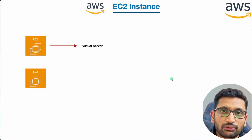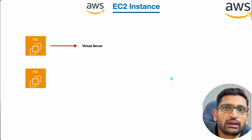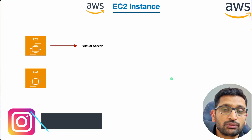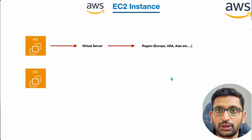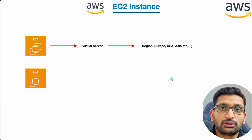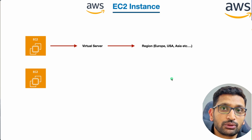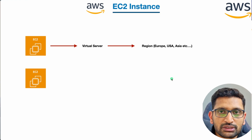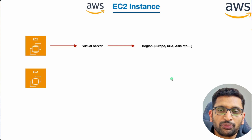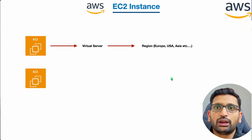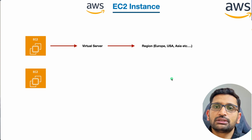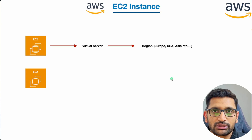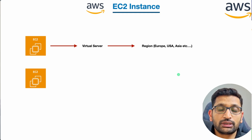An EC2 instance is a virtual server. Traditionally we have seen physical servers in data centers, but an EC2 instance in AWS cloud is just a virtual server running in AWS cloud's data center. These virtual servers can be run in any region. If you are in Asia you choose the nearest data center based on your geographical location, and the same applies for Europe or America. That's the very basic difference between EC2 instances and traditional on-premise servers.